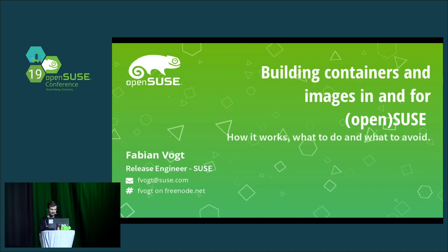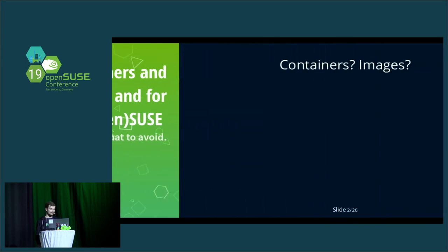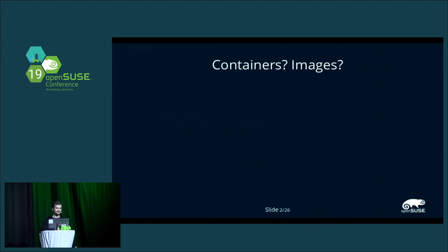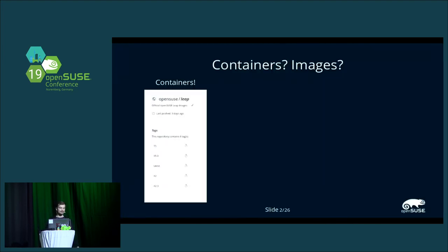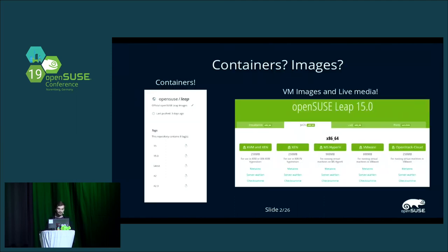By images I mean container images — stuff you find on Docker Hub, like OpenSUSE Leap for various versions — and also Leap, live CDs, also for Tumbleweed.